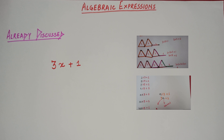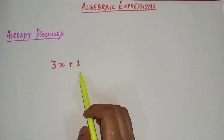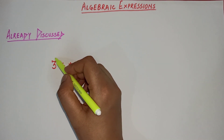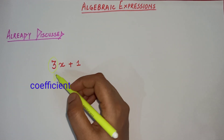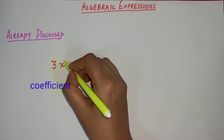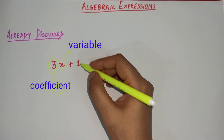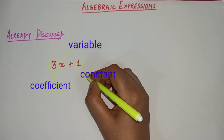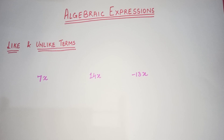There I have explained the parts of an algebraic expression. I have taken 3x plus 1 as an algebraic expression, where I explained that 3 is the coefficient, x is the variable, and 1 is the constant. So today we are going to discuss about like and unlike terms.